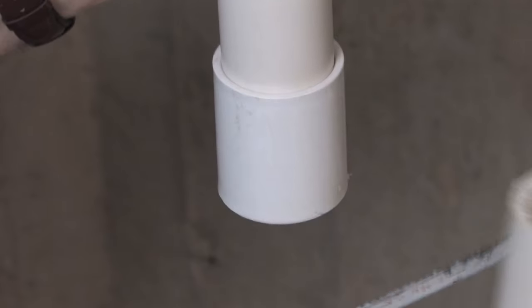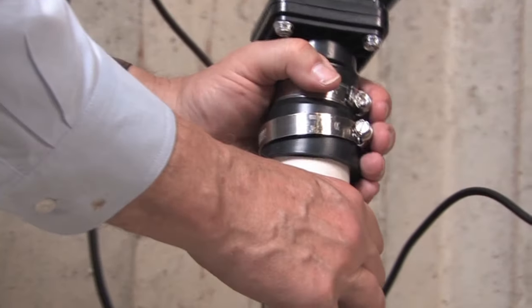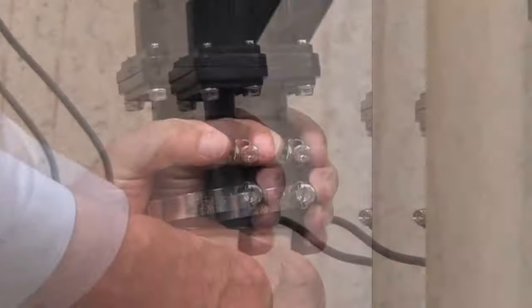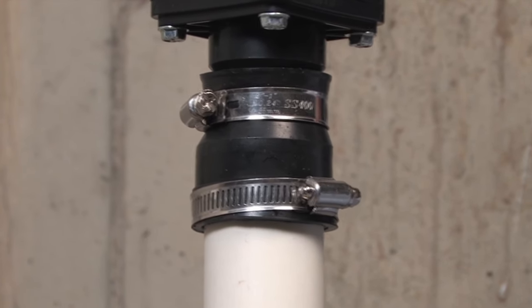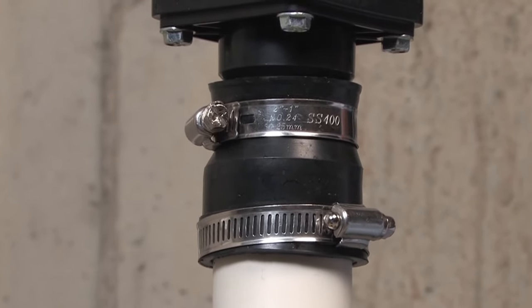Unplug the primary pump and cut the discharge pipe about one foot above the floor. Install a check valve on the top of the discharge pipe and tighten the bottom hose clamp. Make sure the arrow on the check valve is pointing up or it will not prevent the backflow of water.